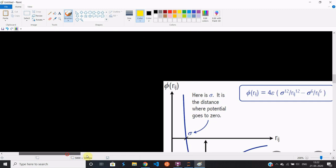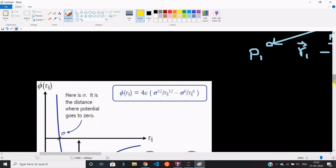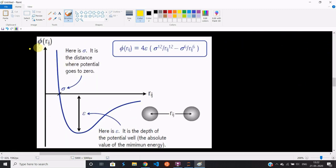Let's look at this potential energy graph. This is the potential energy, and this is the distance between the two particles. Now here, sigma and epsilon come into picture.